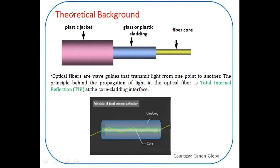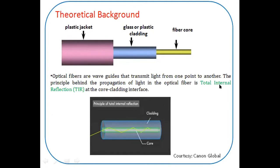Now I will explain the theoretical background for this experiment. For a given fiber, which consists of three regions — fiber core, fiber cladding, and outer covering sheet — the fiber is made of glass or plastic. Optical fibers are waveguides that transmit light from one point to another, based on total internal reflection.